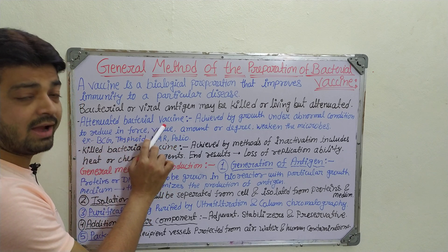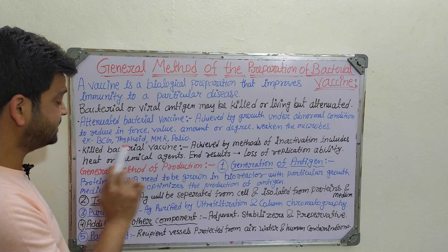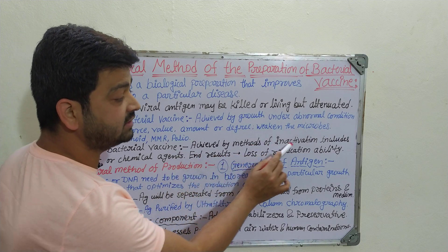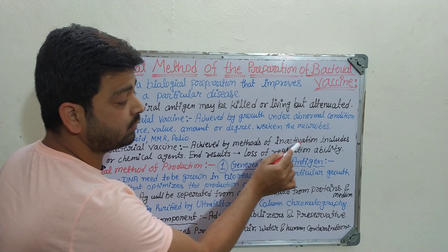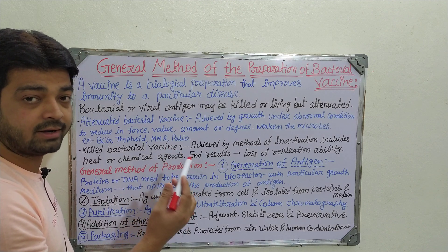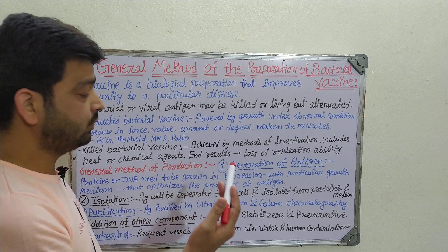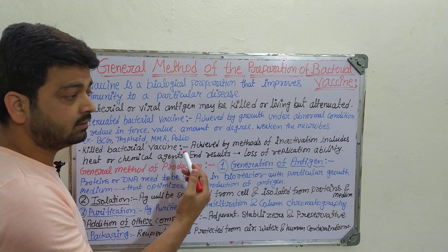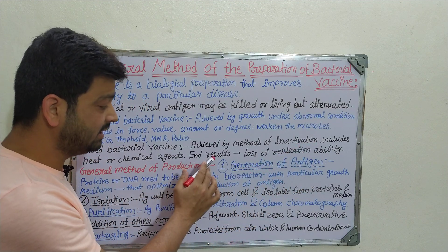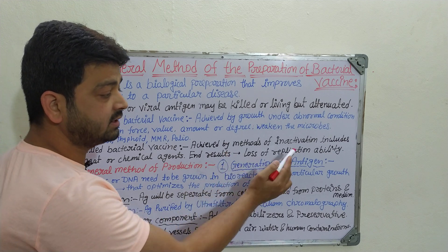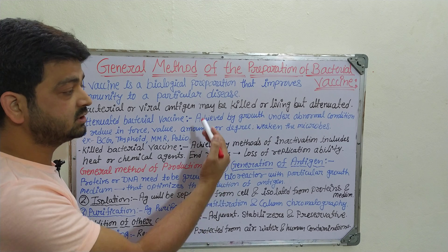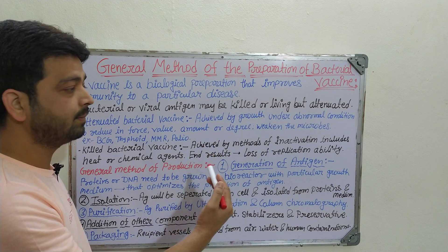Killed bacterial vaccines, as the name indicates, involve killing the bacteria rather than attenuating them. This is achieved by inactivation — either by heat or by chemical agents such as alcohol. The dead bacterial cells are then injected, resulting in loss of replication ability. When this killed bacteria is injected into a person, it cannot replicate, but the immune system is still introduced to the inactivated bacterial antigens.